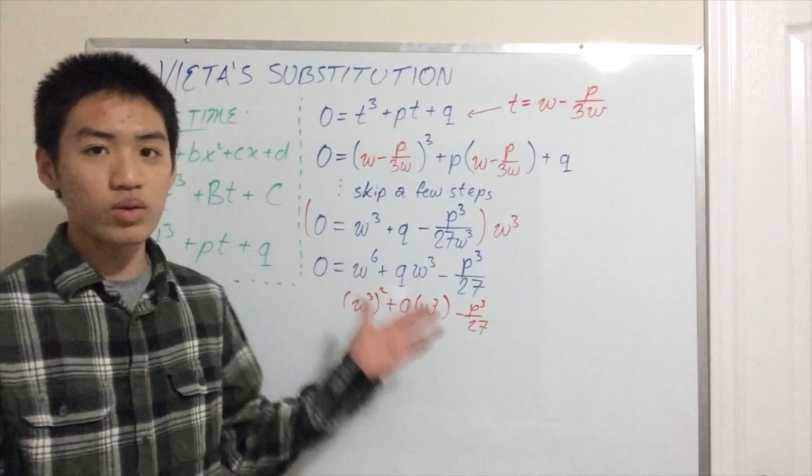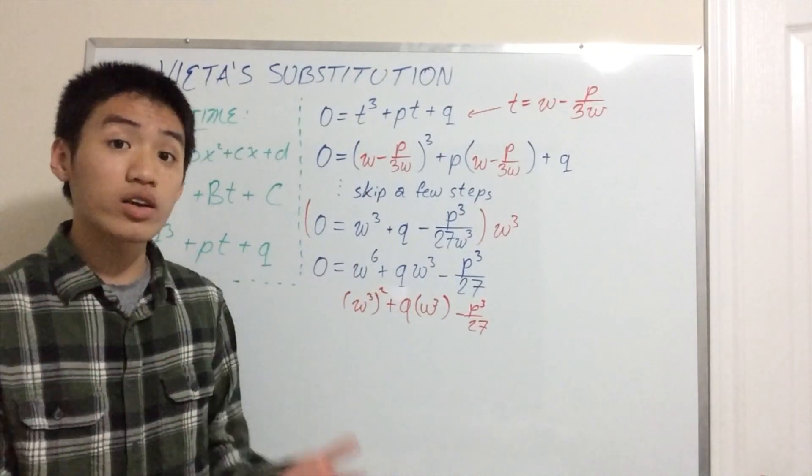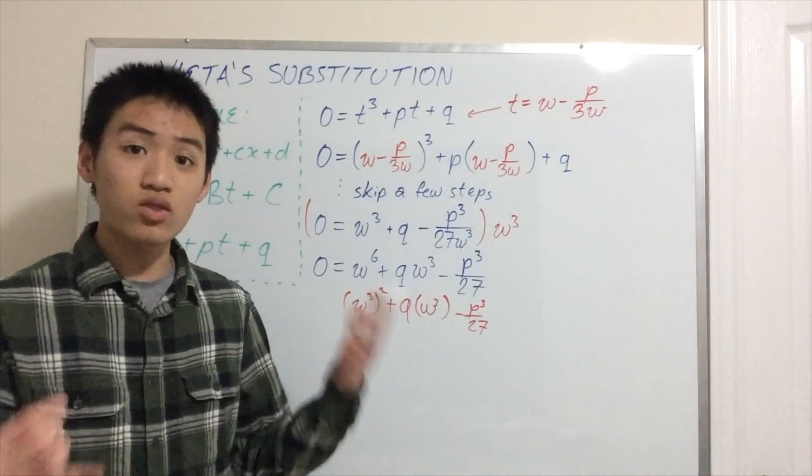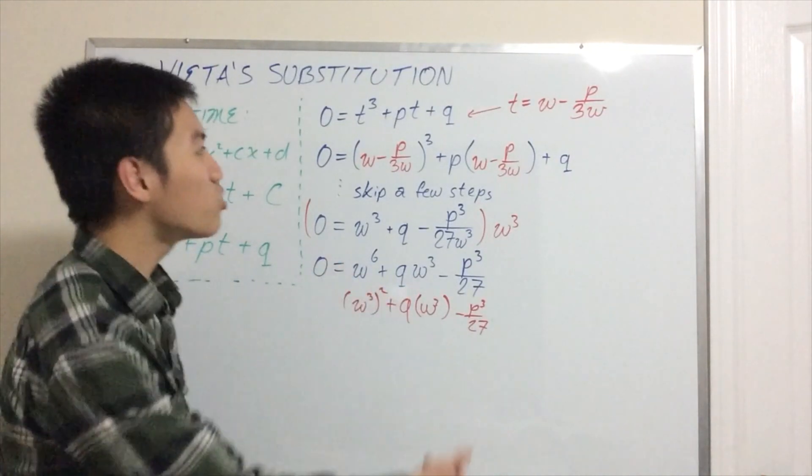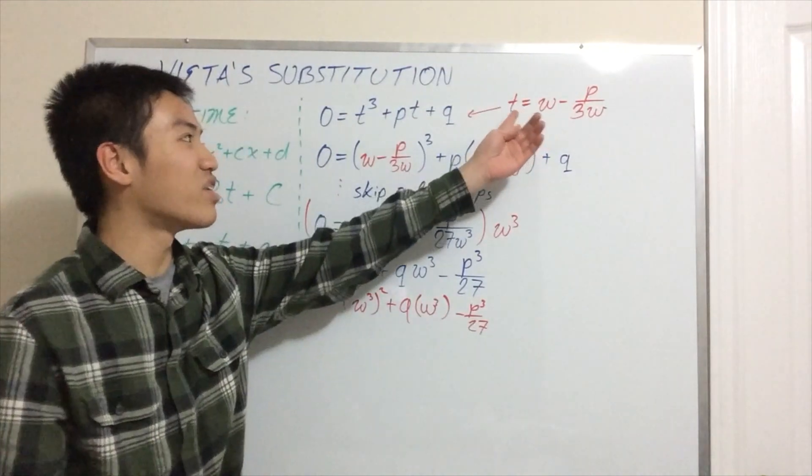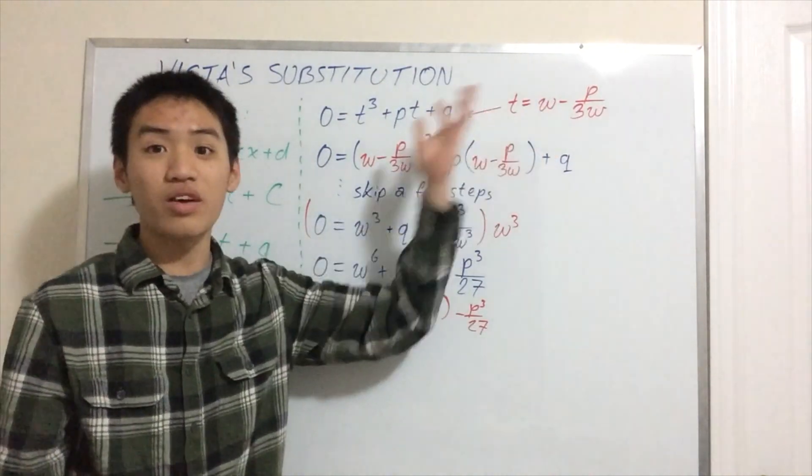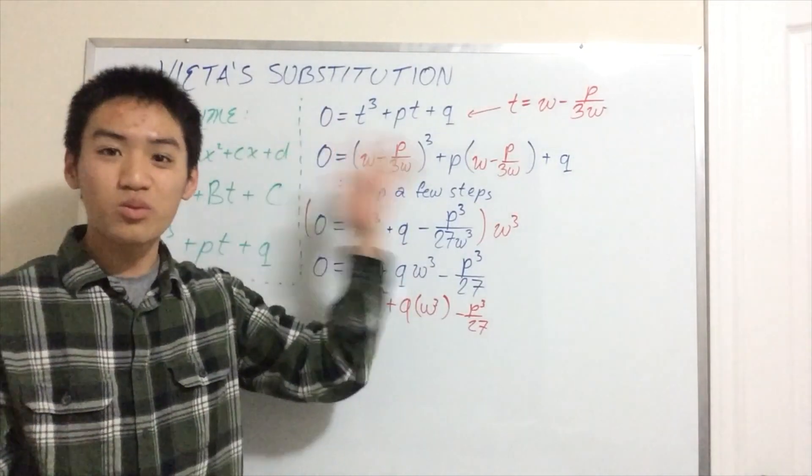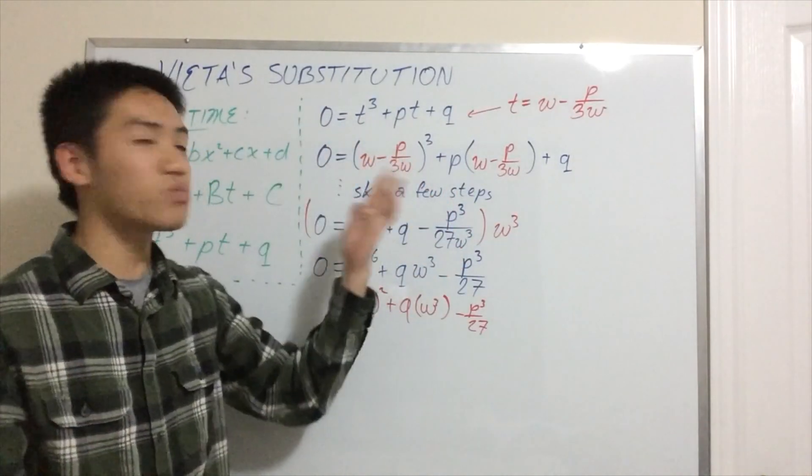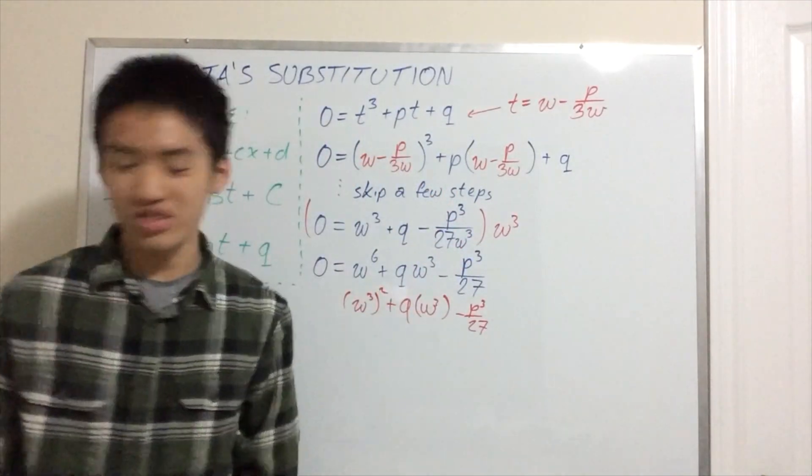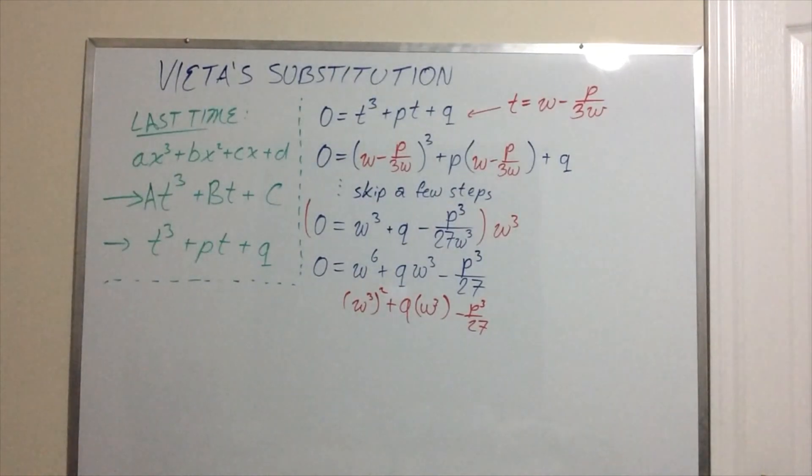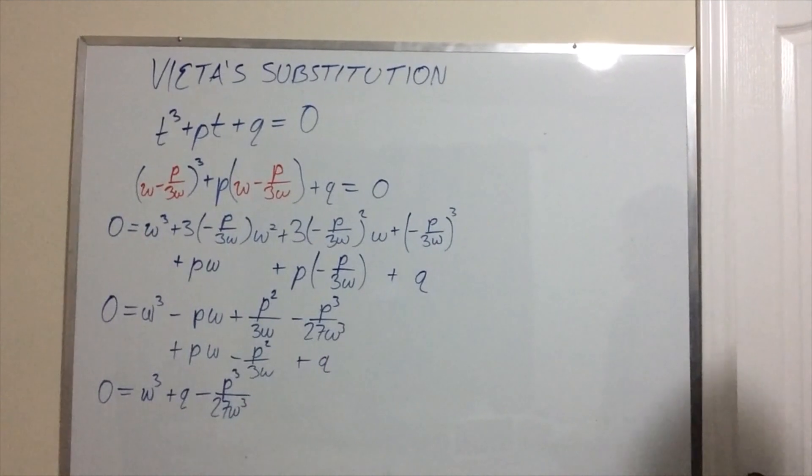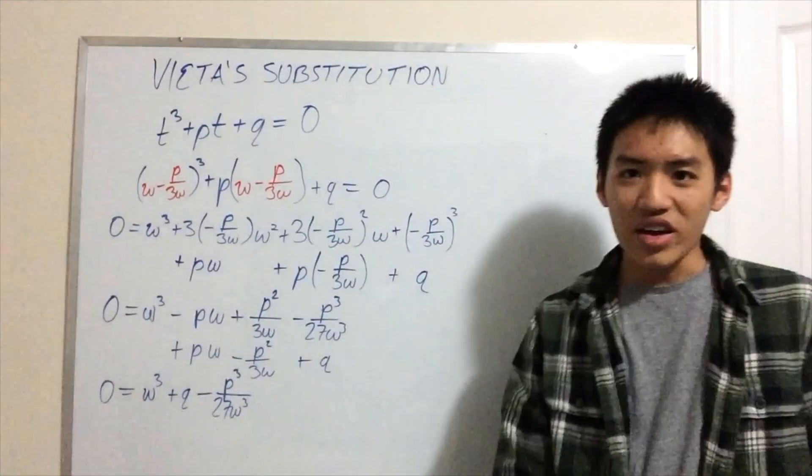So the sextic equation is what we call a quadratic equation in w³. This is just a quadratic equation. We can solve for w³. Take the cube root, plug it back here, and you know t equals something in terms of w. After we do all of this, we've actually found the roots for 0 = t³ + pt + q.